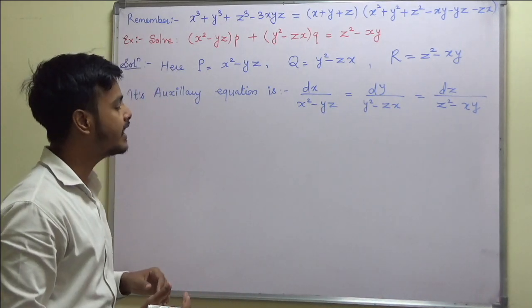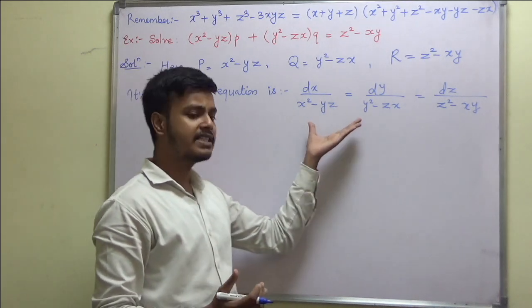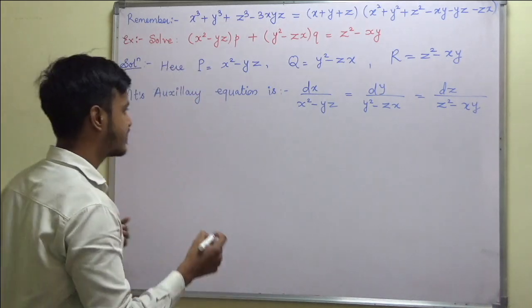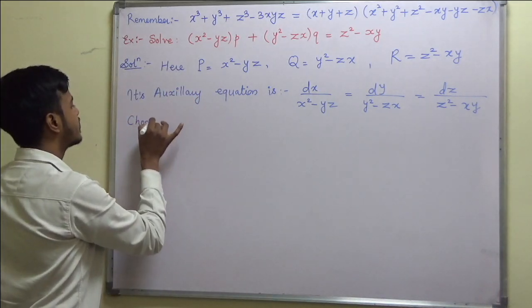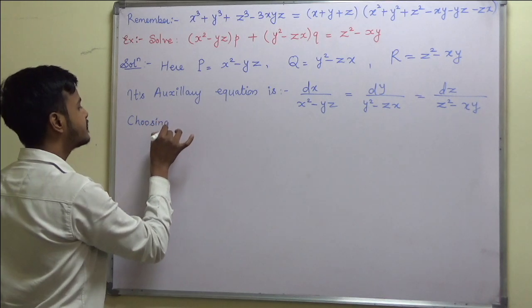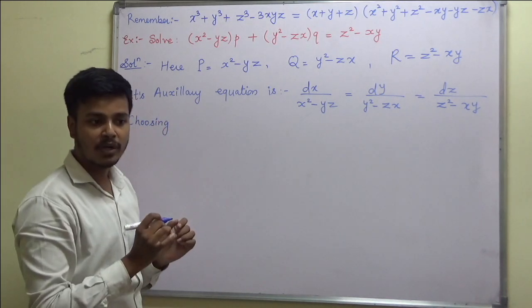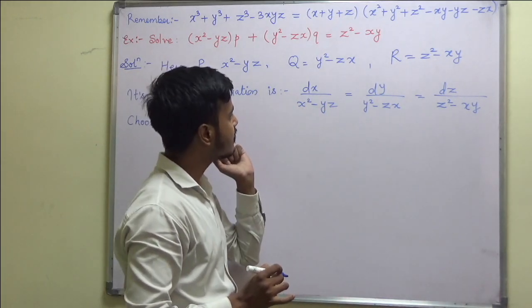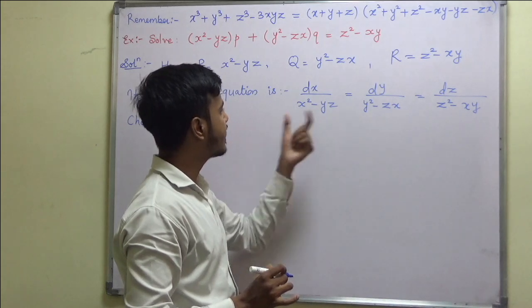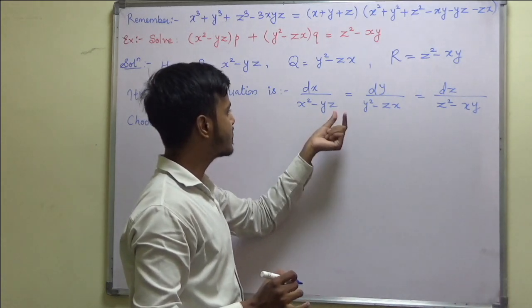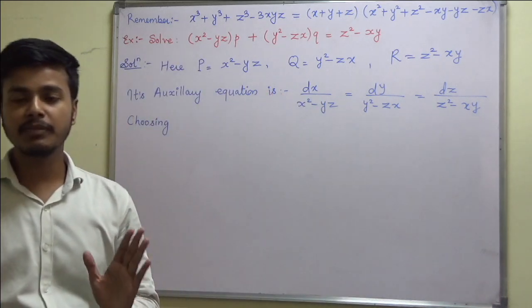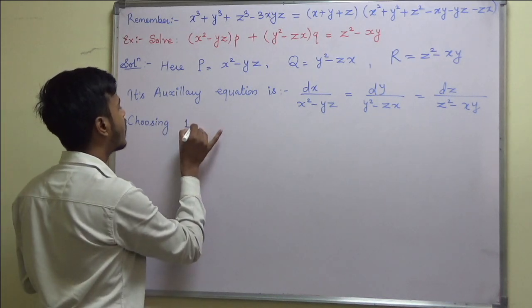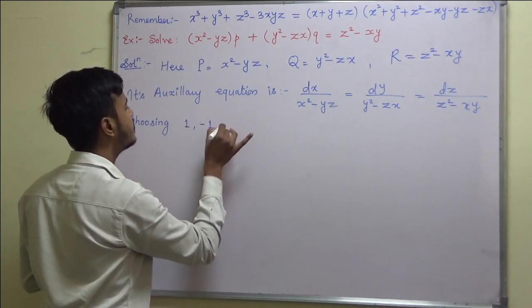Method number 3 says we have to choose non-zero multipliers. I will be selecting multipliers 1, -1, 0. So choosing multipliers 1, -1, 0.